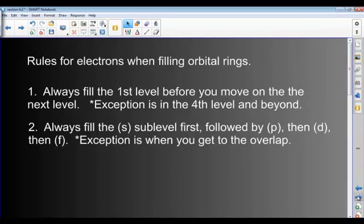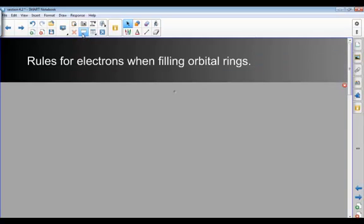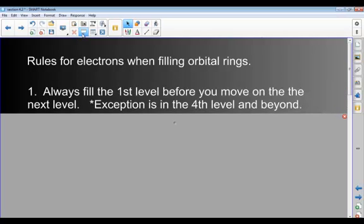Here's some rules when we're actually filling in the orbital rings. This is going to sound like a foreign language at first, but by the end of today you're going to kind of get what I'm talking about. There are going to be rules for when you're filling in the electrons. Like if you had sodium that's number 11 on the periodic table, it's going to have 11 electrons. So if you look at your game board, the first level has how many spots for electrons? Only two spots. You're always going to fill that first level before you move to the next level.